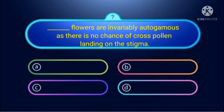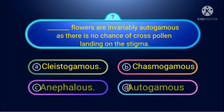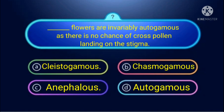First question: Blank flowers are invariably autogamous as there is no chance of cross-pollination. Which of the following shows no possibility of cross-pollination? Options include: cleistogamous flower — a completely closed flower; chasmogamous flower — where stamen and carpel are completely exposed in a bisexual flower; autogamous — meaning self-pollination; and aphyllous — meaning absence of floral parts.